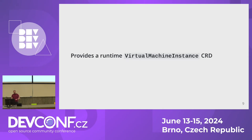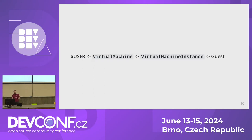The second is the virtual machine instance CRD. This is a runtime instantiation of the virtual machine — a running guest maps to a virtual machine instance. A virtual machine has a one-to-one mapping with a virtual machine instance. We do provide other types like virtual machine pools where that isn't the case, but for the scope of this talk it's one-to-one. In a perfect world, the user interacts with the virtual machine; when it's created and started, it creates a virtual machine instance that encompasses the running guest.